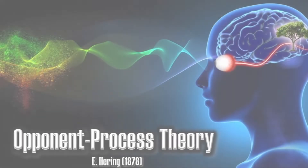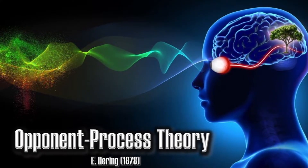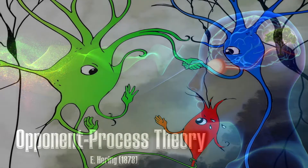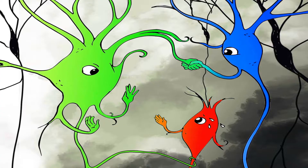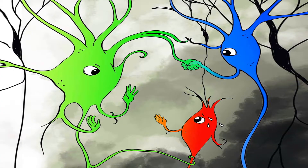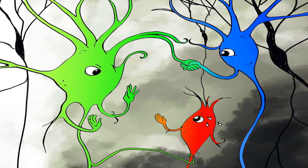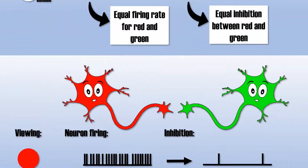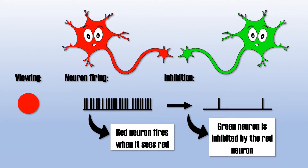This visual illusion can be explained by the opponent process theory. This theory suggests that ganglion cells in the eyes and color-processing neurons in the visual cortex share an inhibitory connection to cells that encode the opposite color. For example, if you look at the color red, neurons that process red will be excited and start firing. They will also send an inhibitory signal to neurons that process green, so these neurons will become suppressed.